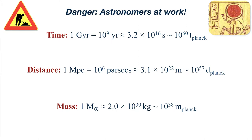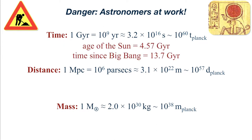In cosmology we sometimes have to talk about very large length scales, very long time scales, and very large masses. The basic time unit I'll be using is the giga year — 10 to the 9 years, about 3 times 10 to the 16 seconds, or about 10 to the 60 times the Planck time. The giga year is useful because many astronomical objects are giga years old: for instance, the sun is about 4.57 giga years old, and the age of the universe — the time elapsed since the beginning of expansion in the Big Bang — is about 13.7 giga years.